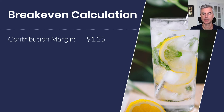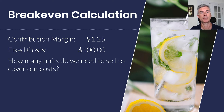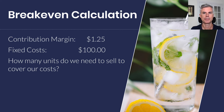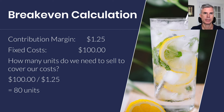If our contribution margin is $1.25 and we have fixed costs of $100 — which does not include the variable costs, so it's not the ingredients — perhaps we're at a farmer's market and had to pay $100 for the space, or we just want to take $100 home. The formula is: divide the fixed costs by the contribution margin to get the number of units. So $100 divided by $1.25 gives you 80 units. We need to sell 80 units to break even.